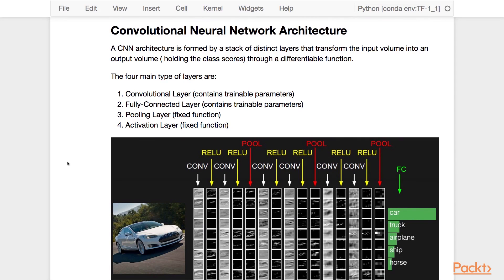So in conclusion, a CNN architecture is formed by stacking distinct layers that transform the input volume into an output volume holding the class scores through a differentiable function. The four main types of layers are the convolutional layer and the fully connected layer, both of which have trainable parameters, and then you also have the pooling layer and the activation layer, which don't have trainable parameters but make the model more efficient and more expressive.